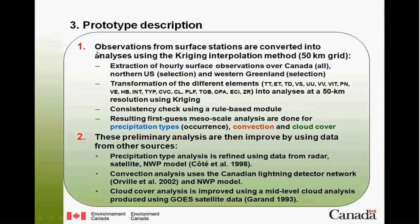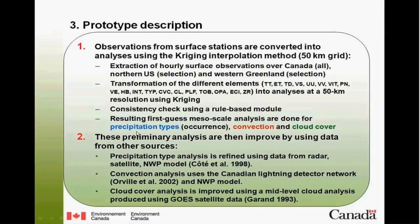How this prototype works: observations from surface stations are converted into an analysis using the Kriging interpolation method. The grid is at 50 kilometres. We extract hourly surface observations over all of Canada, the U.S., and western Greenland for different weather elements, and build analysis at this 50-kilometre grid length using the Kriging method. There is also a consistency check produced with a rule-based module. The result is a first-guess mesoscale analysis done for precipitation type, convection, and cloud cover.